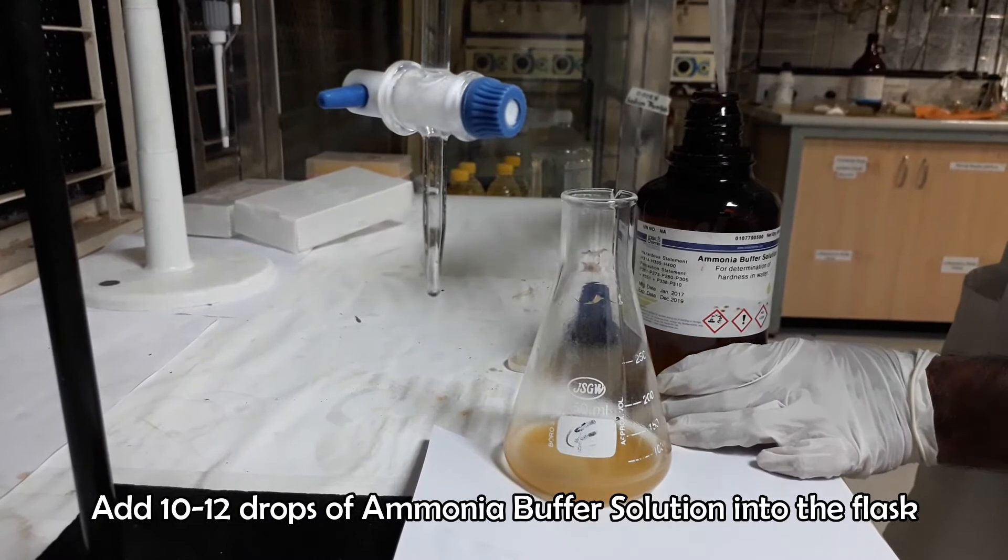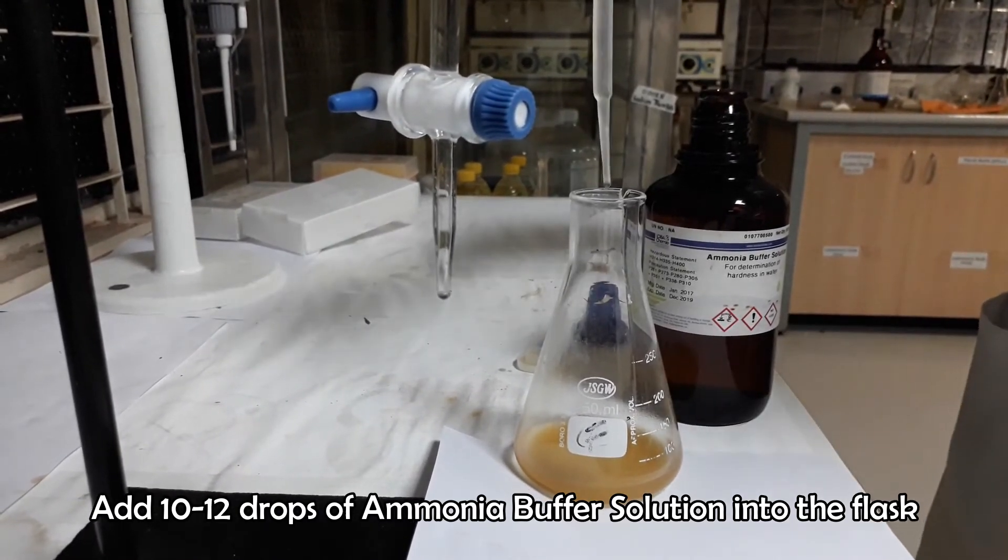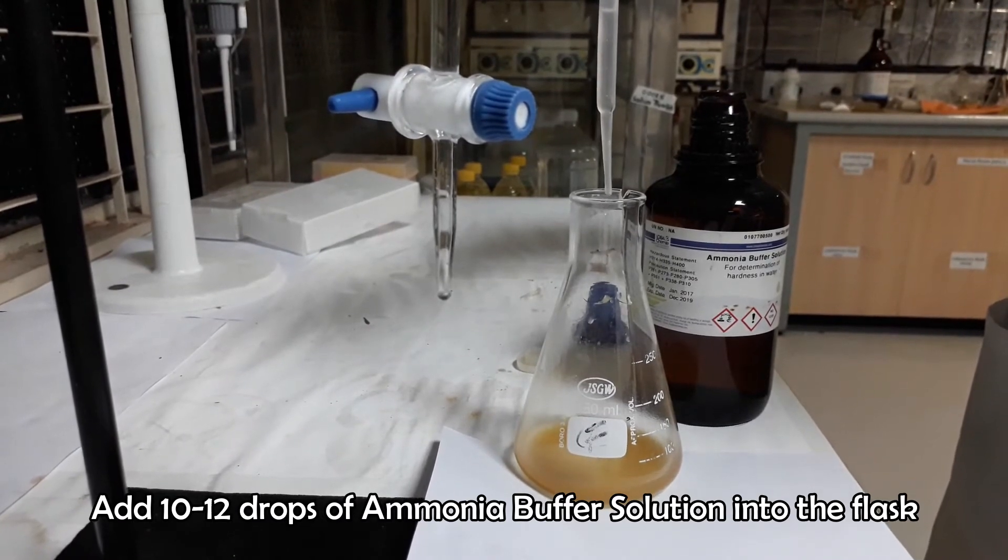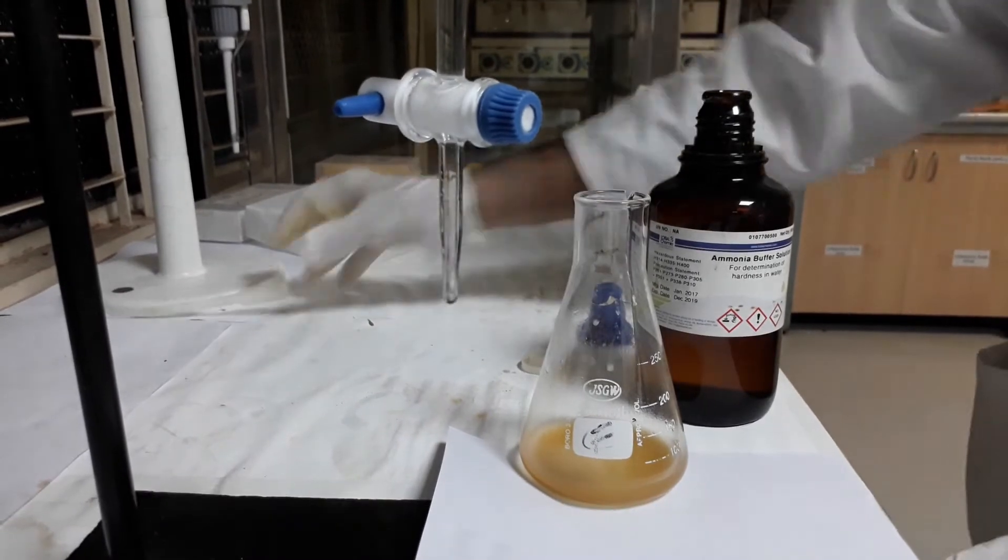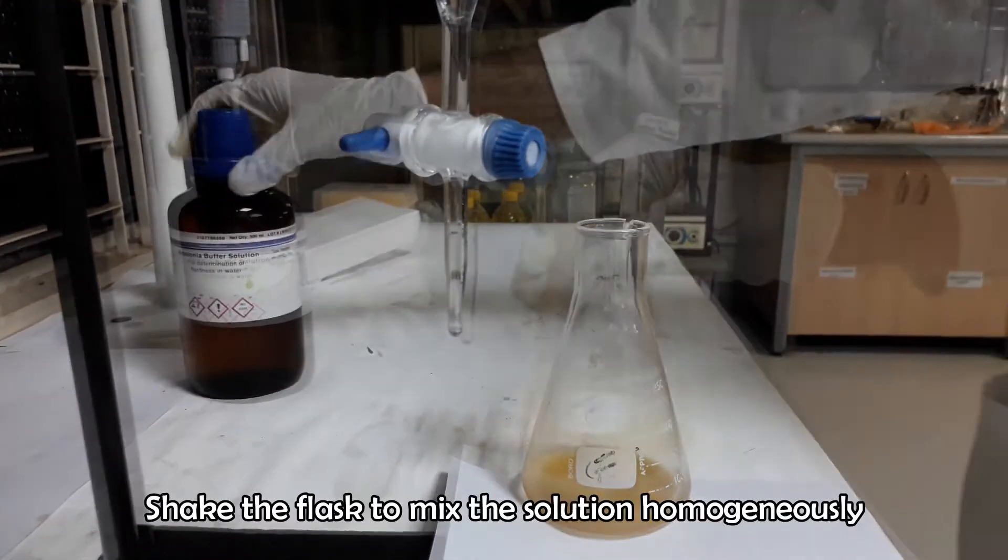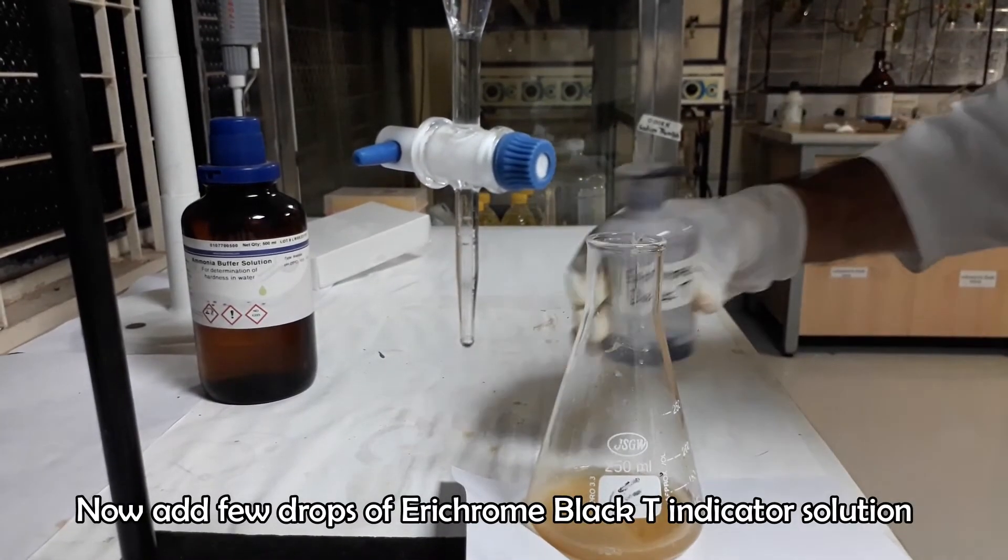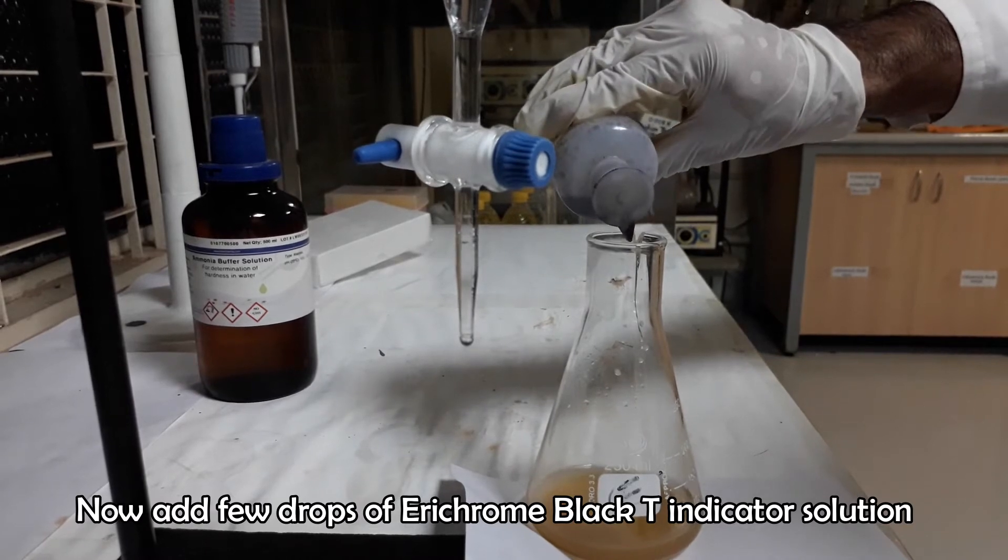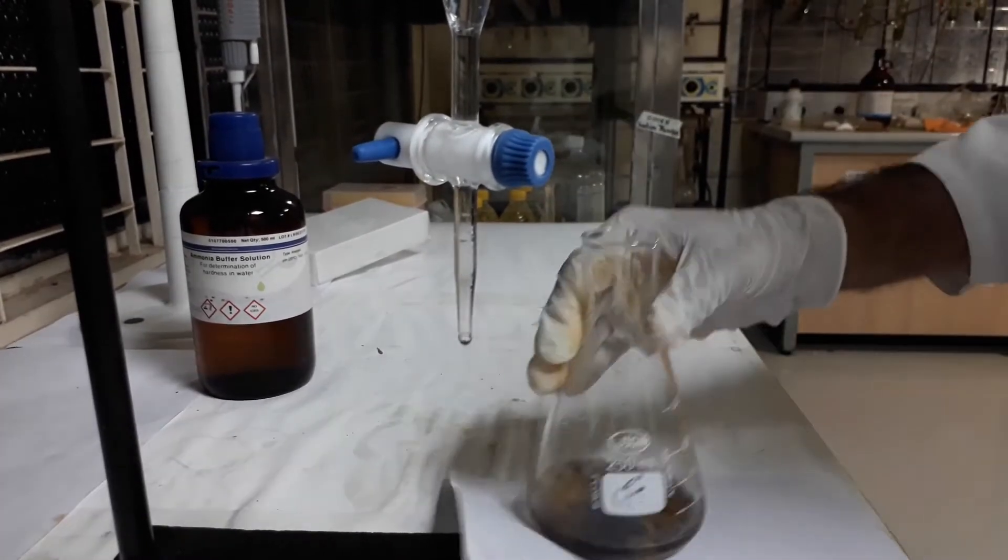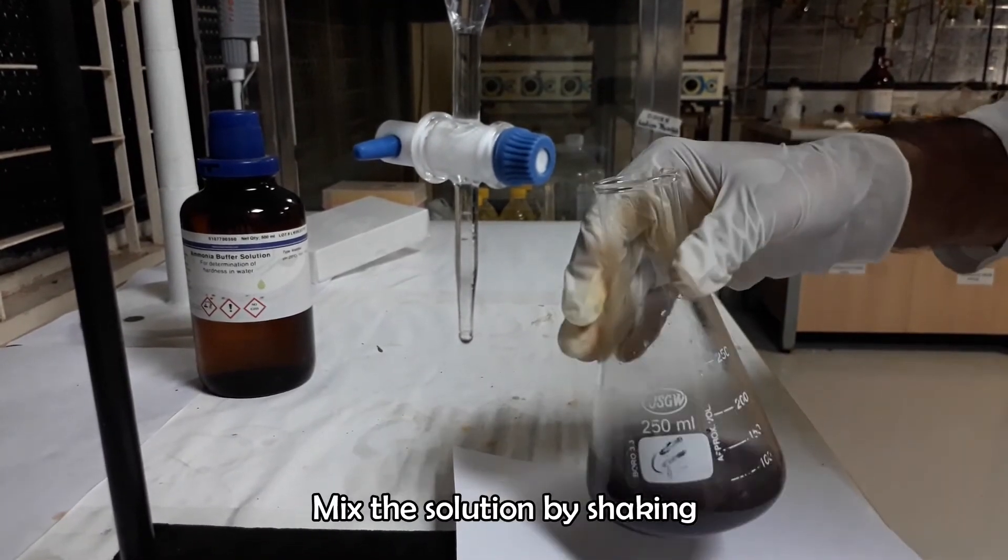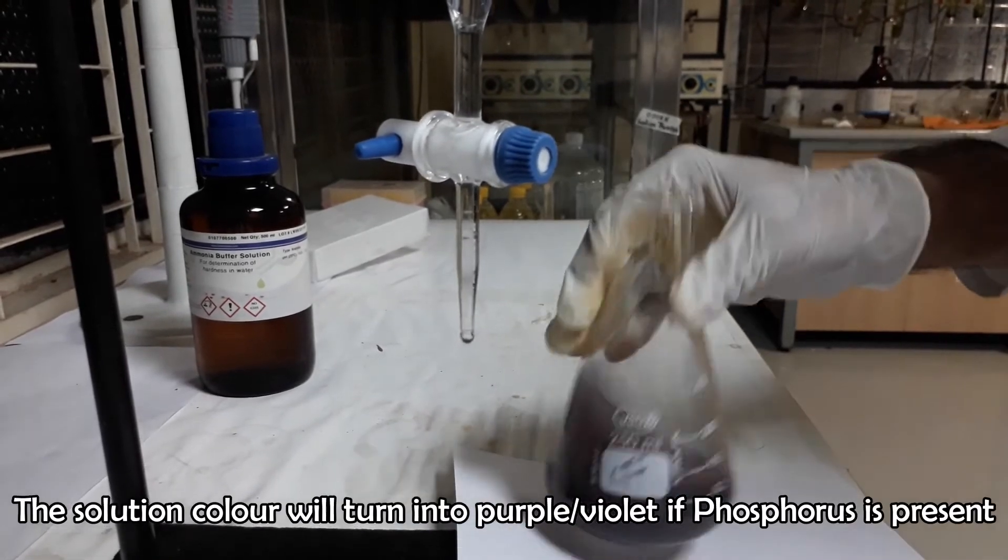Heat the mixture on hot plate for 4 minutes. Now add 10 to 12 drops of ammonia buffer solution into the flask. Shake and rotate the flask clockwise and anticlockwise to make a homogeneous mixture. Add a few drops of erichrome black tea indicator solution. The solution color will turn into purple or violet if phosphorus is present in the sample.